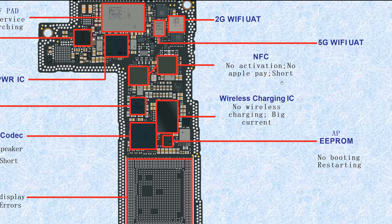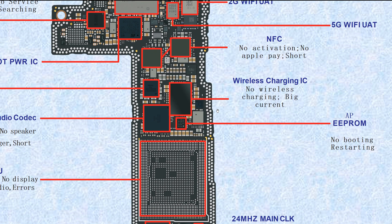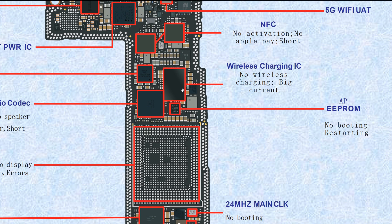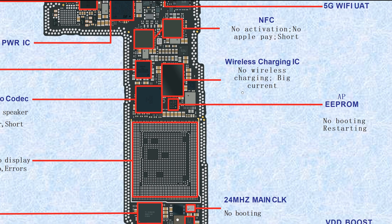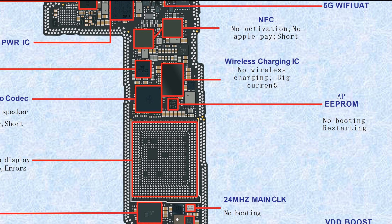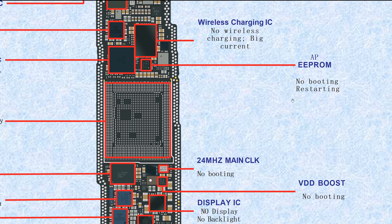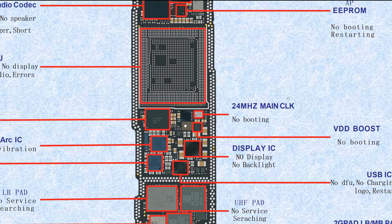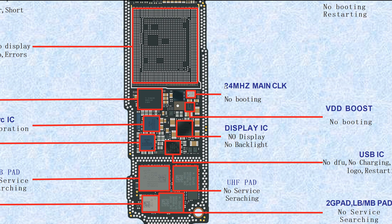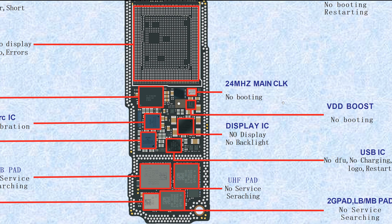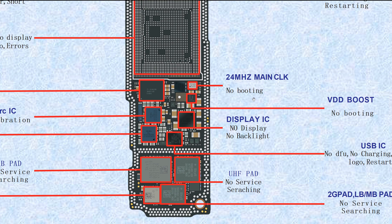These two are for NFC. If NFC is broken, it causes no activation, no Apple Pay, or sometimes a short. This one is the wireless charging IC. If broken, it causes no wireless charging or high current. This one is the AP EPROM — logic EPROM. If broken, it causes no booting or sometimes restarting. This one is the 24 MHz main clock. If broken, it causes no booting.